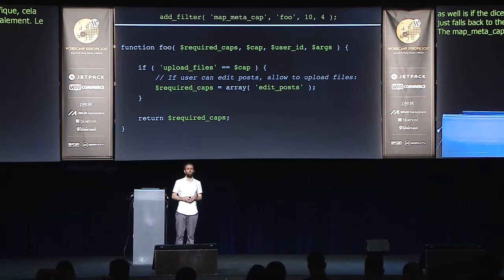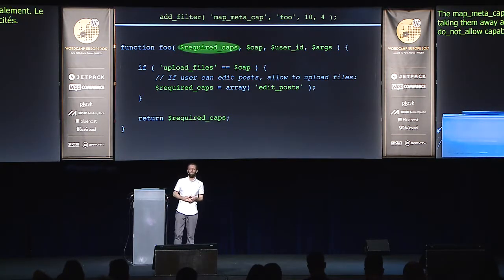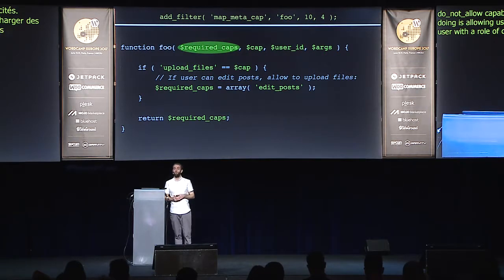The map_meta_cap filter can be used to grant capabilities as well as taking them away. Here we're allowing users to upload files — a contributor role in WordPress can't upload files into posts, so they can't add images. But we can enable this easily with the map_meta_cap filter. We check if upload_files is the current capability check, and if it is, we override the complete array of required capabilities and replace it with just edit_posts. Any user who has the edit_posts capability — whether contributor or a custom role — is now able to upload files. Just three or four lines of code.